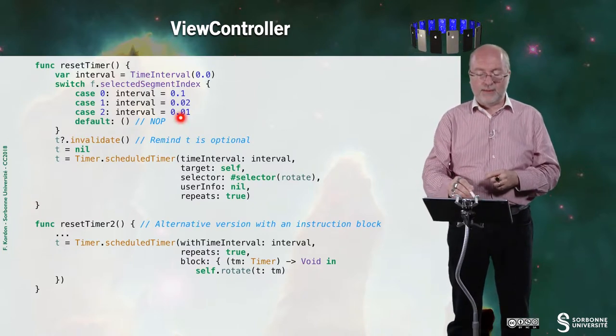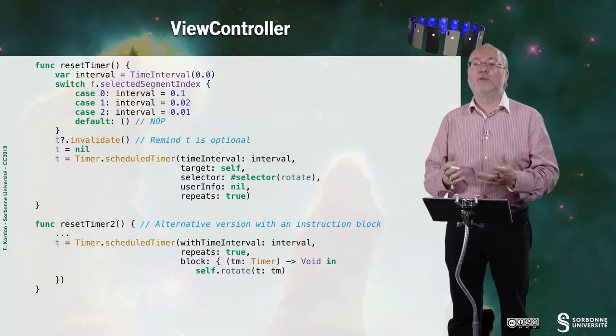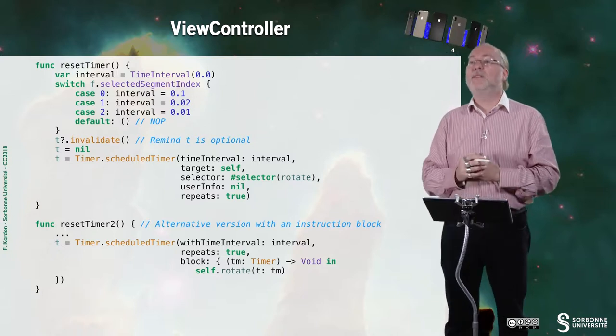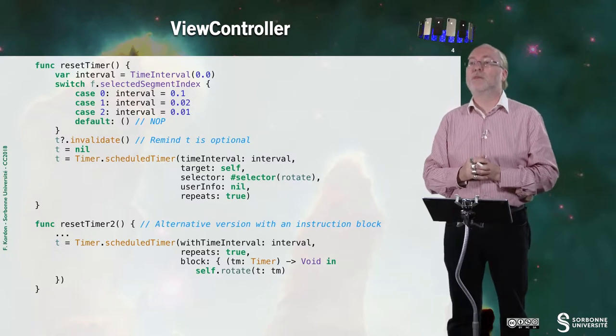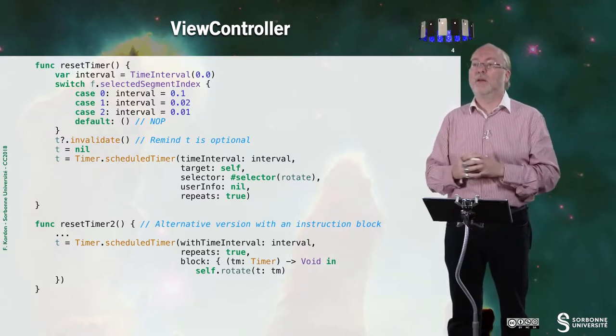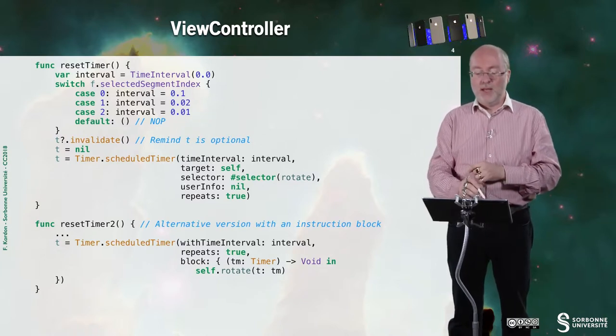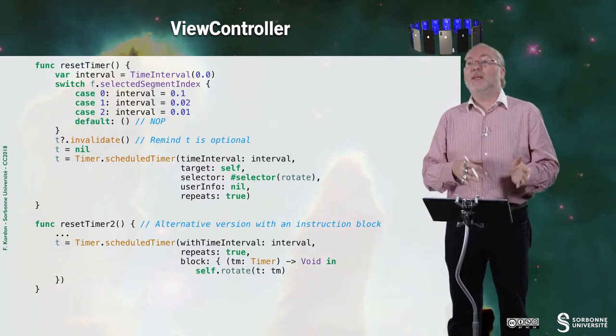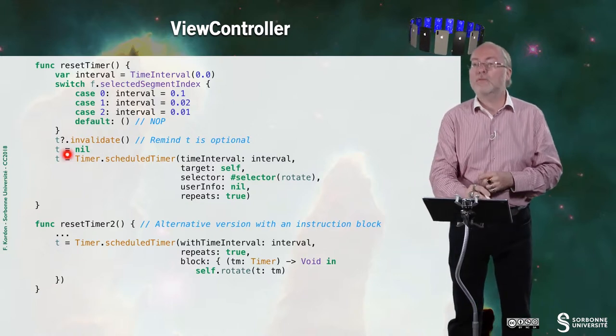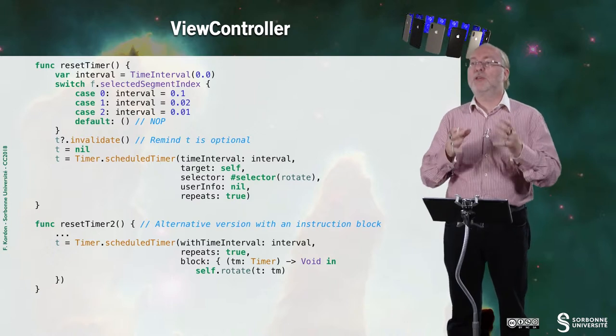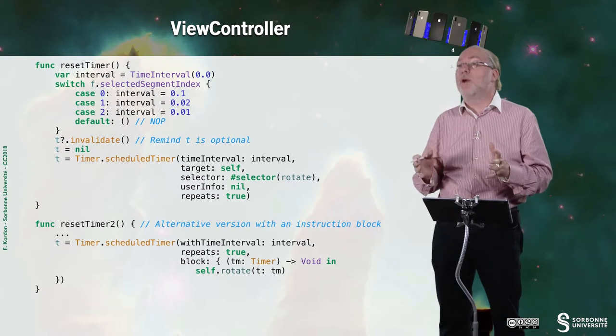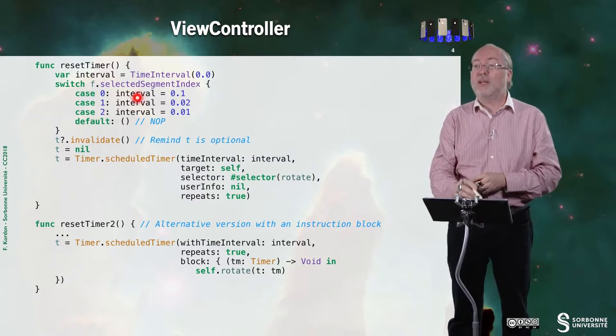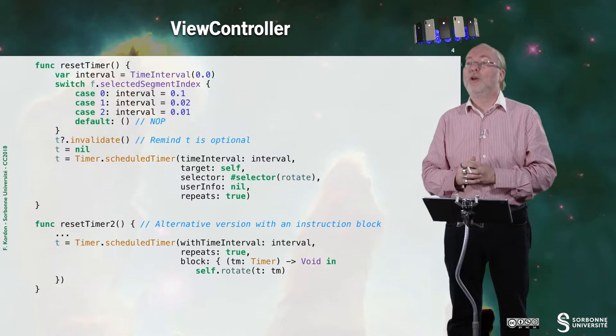ResetTimer allows me to change the timer. According to the value selected in the segmented control, which states the current frequency, I select one of these values. Then I invalidate the timer if it was on. If it's not on, it's set to nil, so I have the question mark here. There is no problem - it's like talking to ghosts in Objective-C. Then I set it to nil anyway, because I don't know if it was already nil or not.